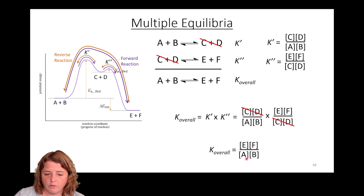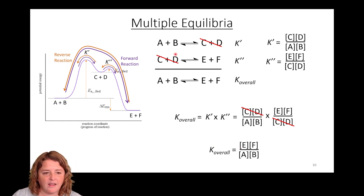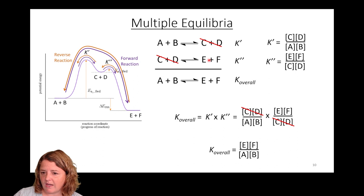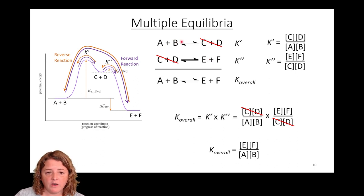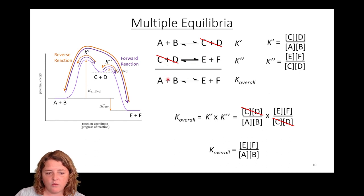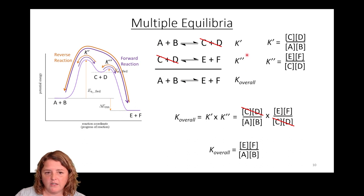So if you know the equilibrium constant for reaction one and the equilibrium constant for reaction two, and you want the overall equilibrium constant for the net reaction, you just multiply those two together.